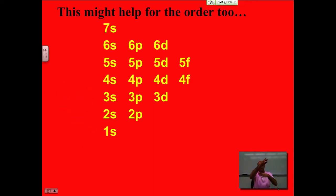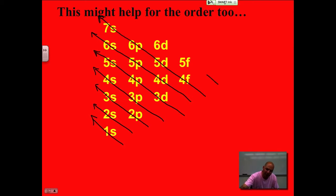If you set up this little kind of Christmas tree, a little arrow looking thing. If you start from the bottom and go off at a diagonal. So 1S first. Then 2S. 2P3S. 3P4S. 3D, 4P5S. 4D, 5P6S. 4F5D, 6P7S. 5F6D. That's the order as well. Some people like that as well.